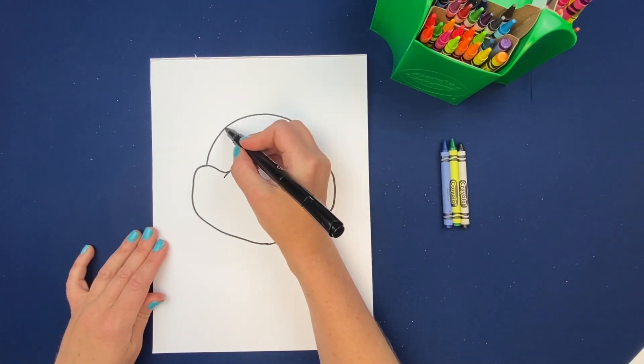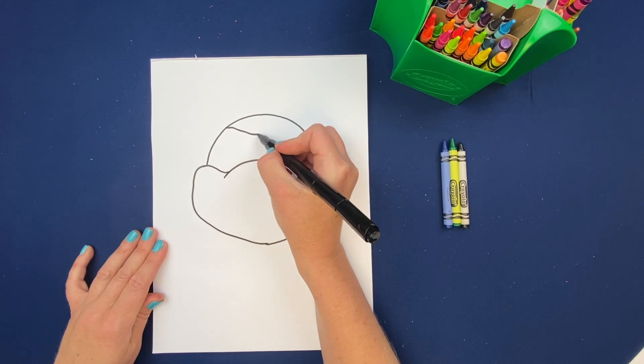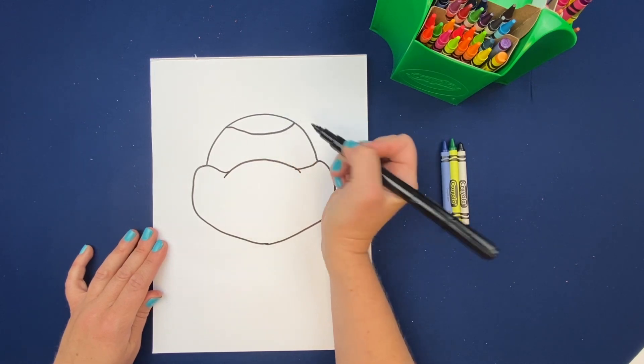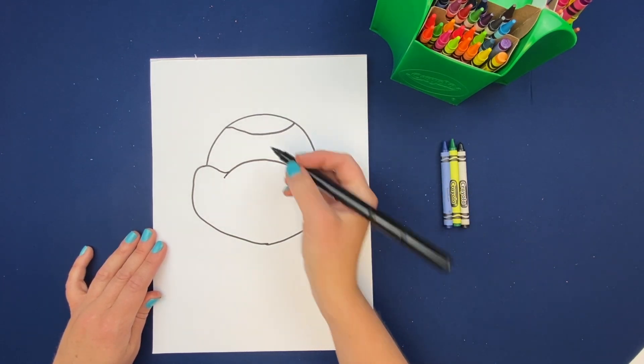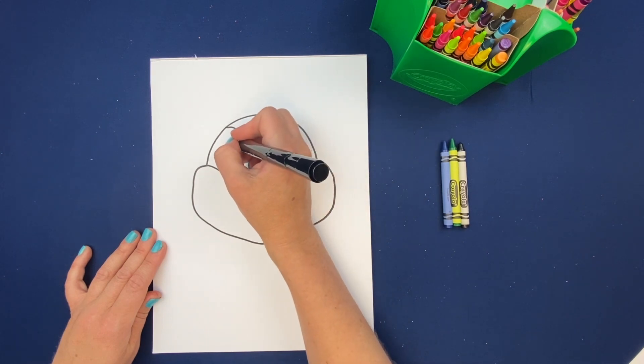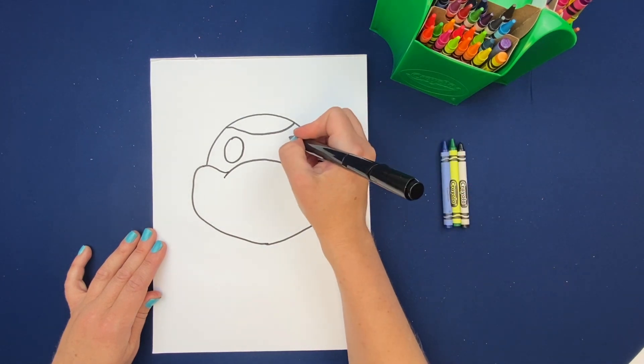Okay, now we're gonna go in and finish up the mask. And then we're gonna draw in the eye holes. So these are just round ovals. Another round oval.